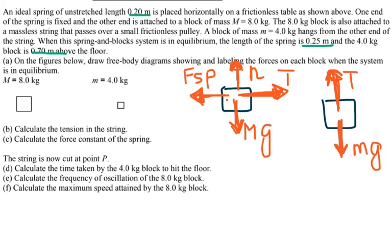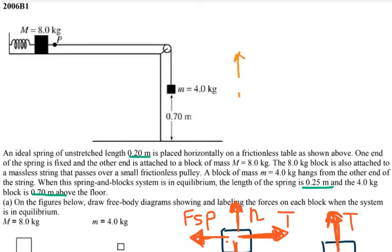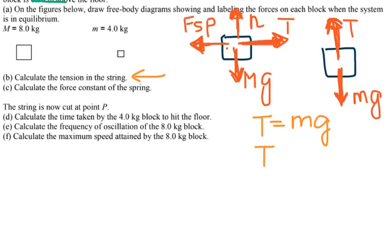For part A, calculate the tension in the string. The tension equals mg when in equilibrium because there is no acceleration — the objects are not moving. Tension acts up and mg acts down, canceling each other. The mass is 4 kg and using g = 10, the tension equals 40 newtons.